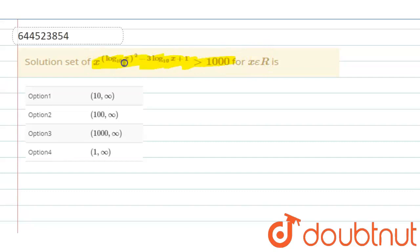Here we need to find out the solution for this question. So given question: x^((log₁₀x)² - 3log₁₀x + 1) > 1000.